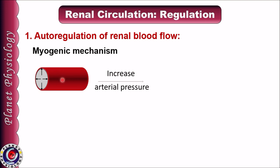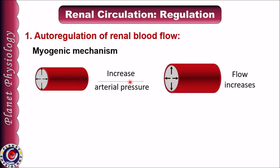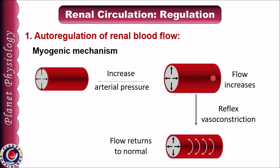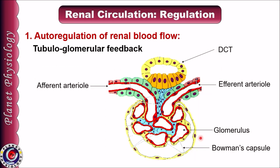In the myogenic mechanism, whenever there is an increase in arterial pressure, the diameter of the blood vessel increases, and as a result blood flow through the vessel increases. Stretching of the blood vessel causes reflex vasoconstriction due to contraction of smooth muscles within it, and as a result blood flow returns to normal.